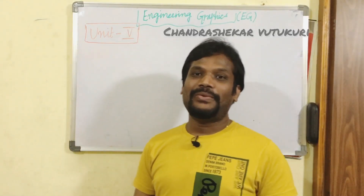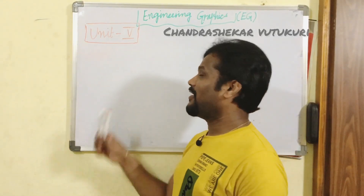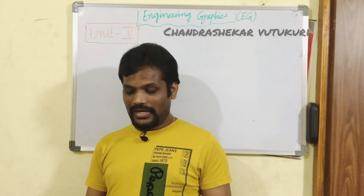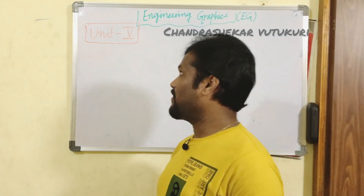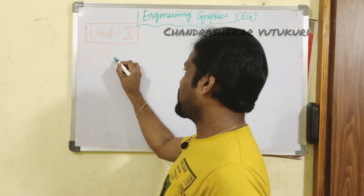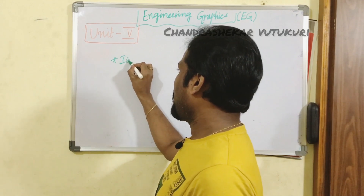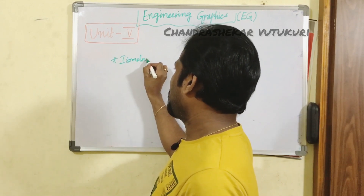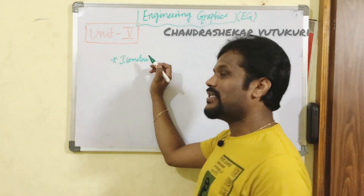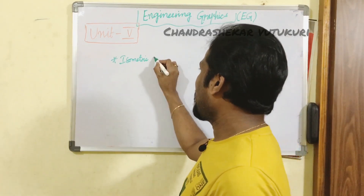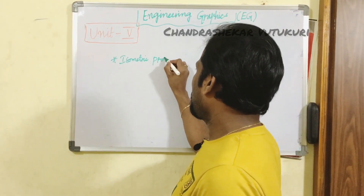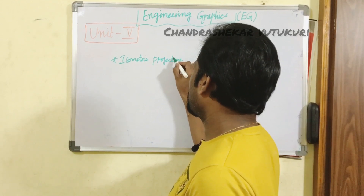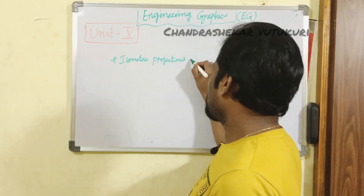Welcome back students. Let's look into the unit 5 important and gunshot questions for the course engineering graphics. Unit 5 is all about isometric projections, and it is completely new compared to the remaining units. We should be strong in the fundamentals of isometric projections.